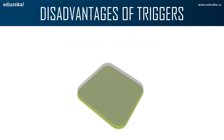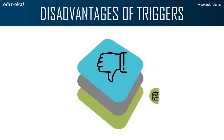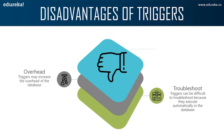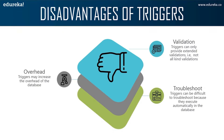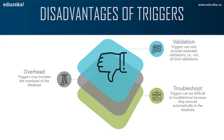Now let's look at the disadvantages of a trigger. Triggers can only provide extended validation — not all kinds of validation. For simple validations, you cannot use NOT NULL, UNIQUE, CHECK, and FOREIGN KEY constraints in a trigger. Next, triggers may increase the overhead of a database. Finally, triggers can be difficult to troubleshoot because they execute automatically in the database and may not be visible to client applications.